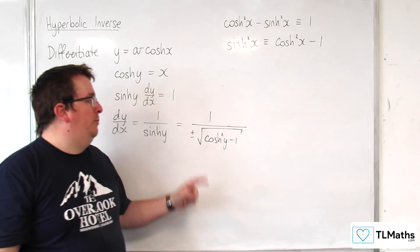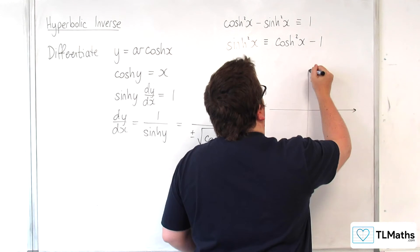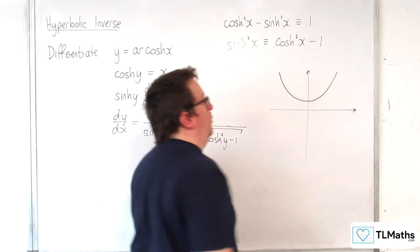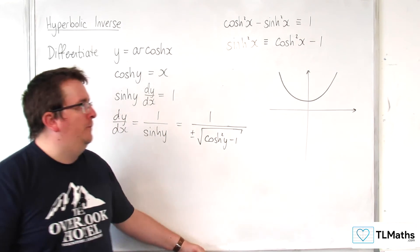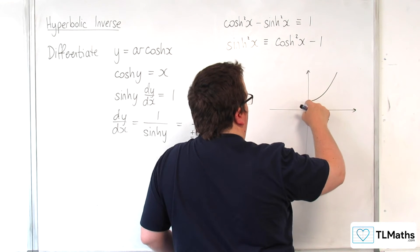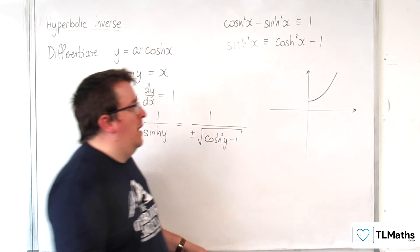Now we've got a plus or minus here. So let's consider the function we're looking at. Here was y equals cosh of x but we restricted the domain to x is greater than or equal to 0 so that it could be 1 to 1.